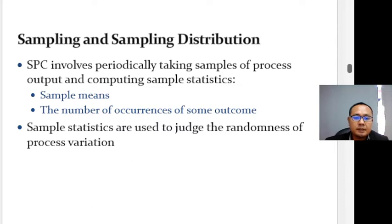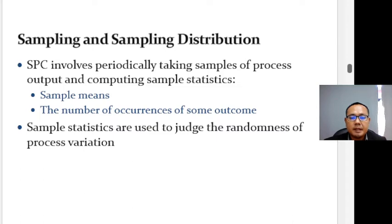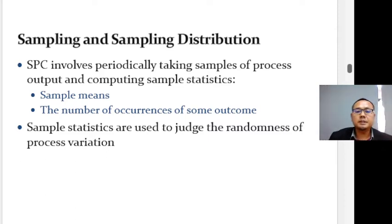In Statistical Process Control, periodic samples of process output are taken and sample statistics such as sample means or number of occurrences of a certain type are determined. These sample statistics can be used to judge the randomness of variation in a process. The variability of sample statistics can be described by a sampling distribution — a theoretical distribution describing the random variability of sample statistics. The most frequently used distribution is the normal distribution.